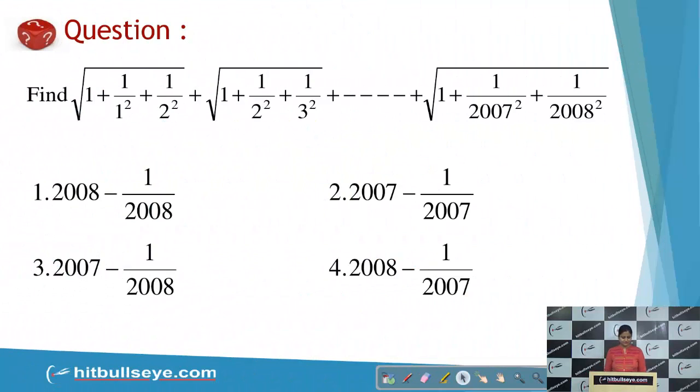So let us start. As you can see my sum is find the value of square root of 1 plus 1 upon 1 square plus 1 upon 2 square plus square root of 1 plus 1 upon 2 square plus 1 upon 3 square and so on up to, and the last term is also mentioned. This is an original CAT question.